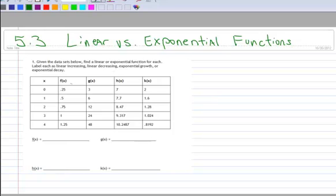And we've got a data set for f of x, g of x, h of x, and k of x. So let's examine each one, and we want to figure out if we've got linear or exponential. And we want to figure out if we have increasing or decreasing or growth or decay.